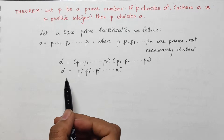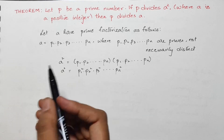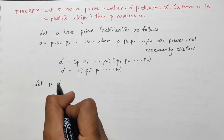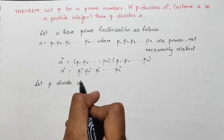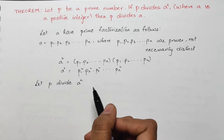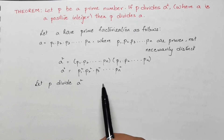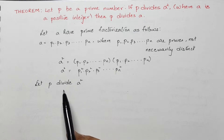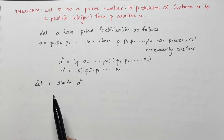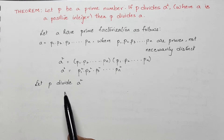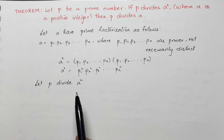Now we have that p, a prime number, divides a squared. According to the fundamental theorem of arithmetic, the only prime factors of a squared are p1, p2, and so on till pn. So if p divides a squared, then p is one of p1, p2, and so on till pn.